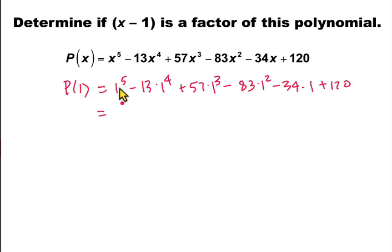Simplifying, we get 1 to the fifth is simply 1, 1 to the fourth is also 1, so 1 minus 13. 1 cubed is also 1, so plus 57.